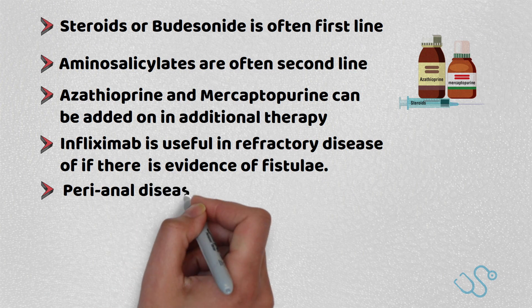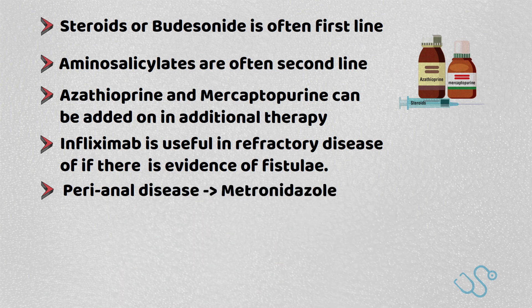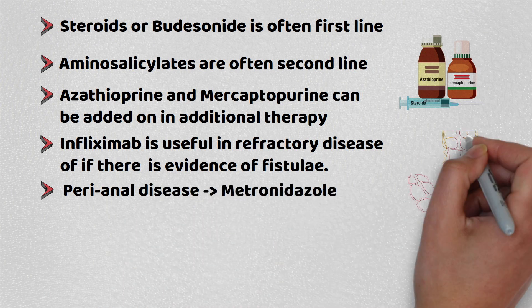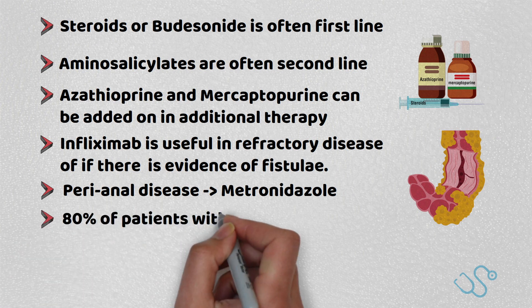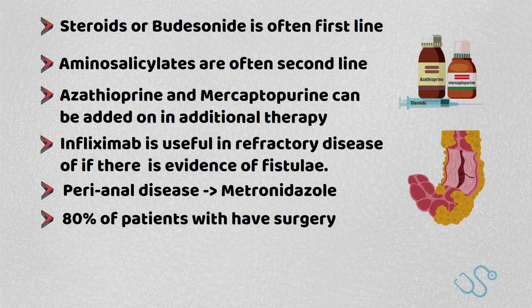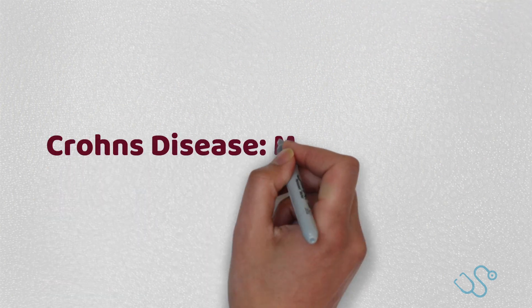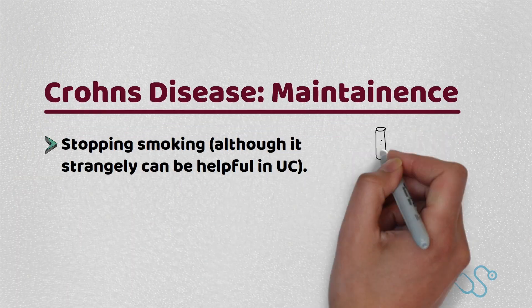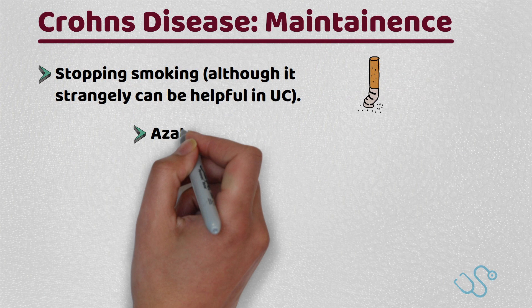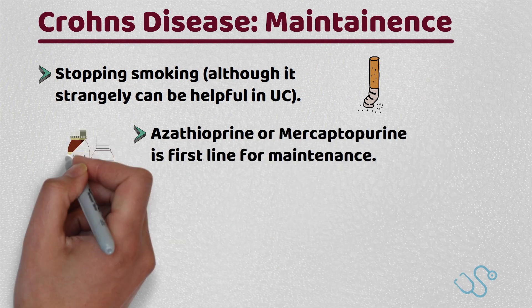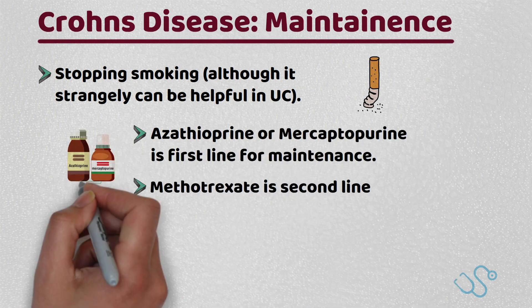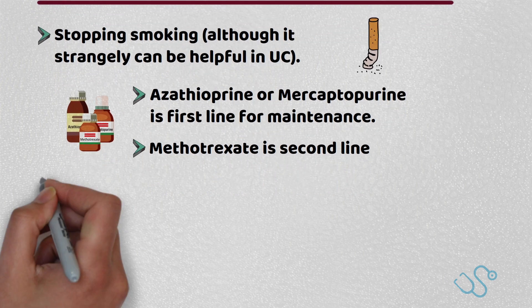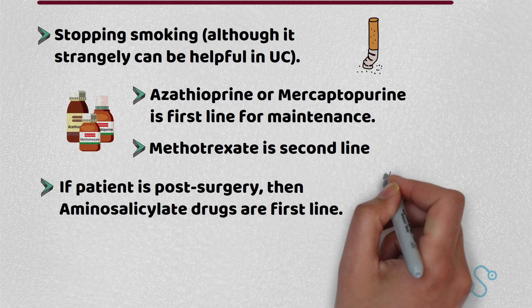If there's only mild perianal disease, metronidazole alone can be considered. Unfortunately, 80% of patients with Crohn's disease will end up having surgery, often because of terminal ileal strictures, bowel obstruction or fistulae. Maintenance is achieved by stopping smoking, though interestingly smoking is actually helpful in UC. Azathioprine or mercaptopurine is first-line for maintenance, with methotrexate as second-line. If a patient is post-surgery, aminosalicylate drugs are often used.